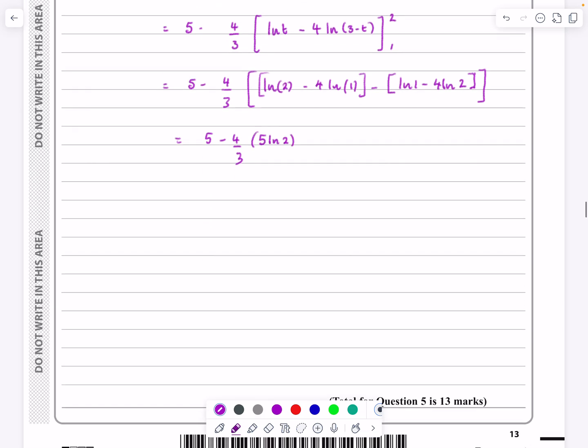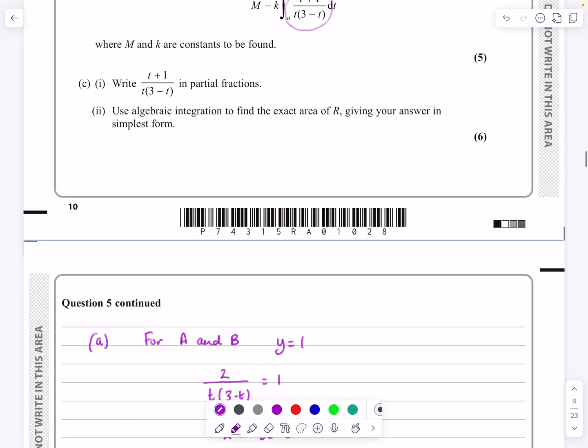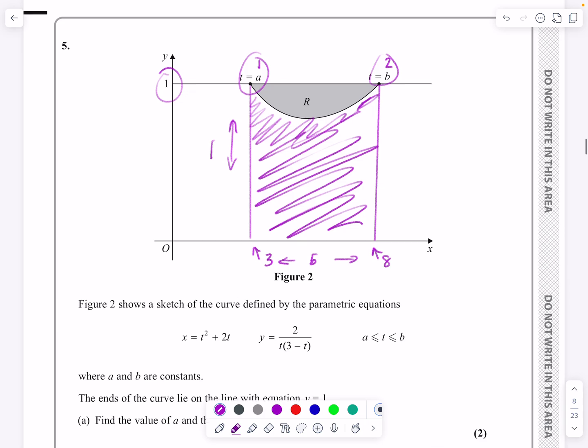So we just want it to look relatively neat here. I'm going to leave this as 5 minus 20 over 3 log 2. And as I say, they could have asked me to do something else with that, but unless they asked me to put it in a format, that's simplified and that will be my answer. So yeah, quite a long question there, lots of different parts to it. You might need to look at that video a couple of times, but hopefully that all makes sense to you all.